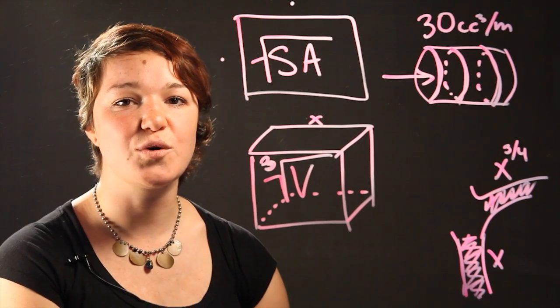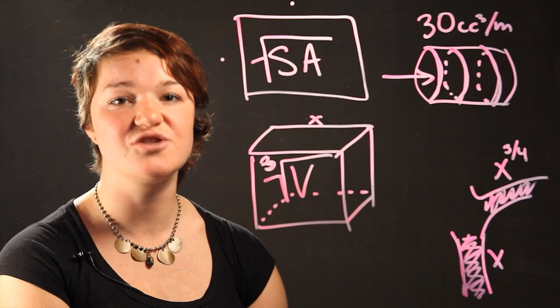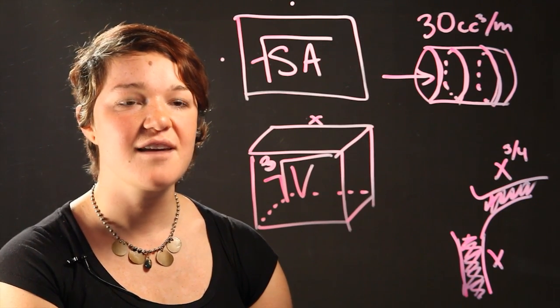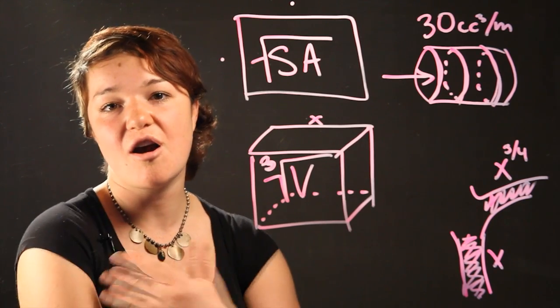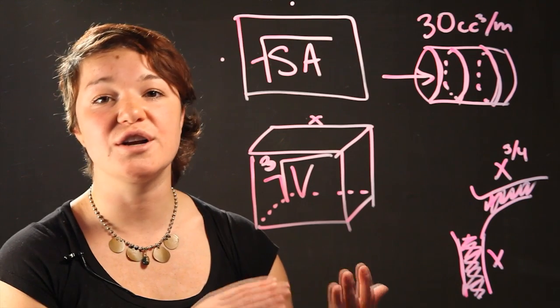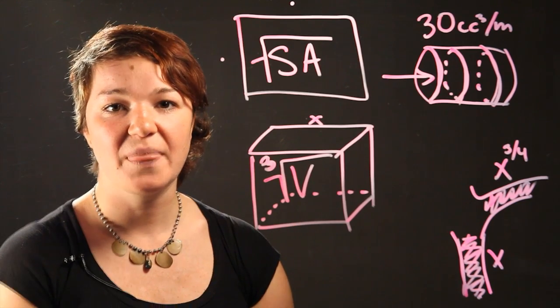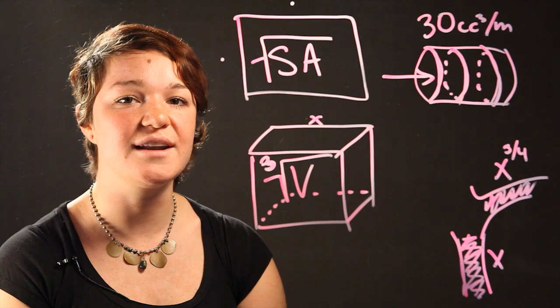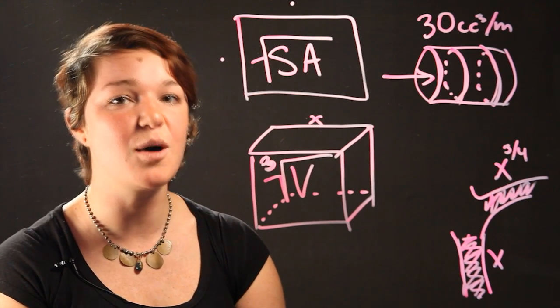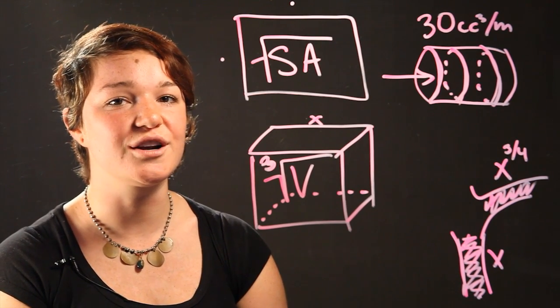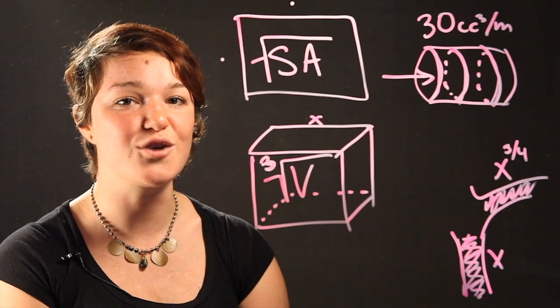Your main veins that are going from your heart have a very large volume or surface area, and when they branch out into your arms or even smaller to bring blood to your cells, they're going to get smaller and smaller. And every time that they branch out and get smaller, they're going to get smaller with the radical of three-quarters.